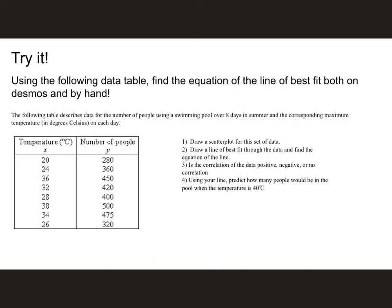I'd like you to try this one two different ways. First, I'd like you to use the data table here and find the equation of the line of best fit by using Desmos. Then sketch this out on a piece of graph paper, plot the points, and see if you can come up with a line of best fit by hand. After you draw the scatter plot and the line of best fit, figure out is there a positive, negative, or no correlation. Then using your line, tell me how many people would be in the pool if the temperature was 40 degrees Celsius. Pause the video now and we'll go over these answers here in a second.